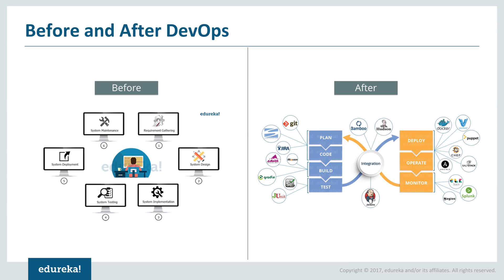Before DevOps, the methodology used was the waterfall model, which had a lot of issues because the entire source code of the application was first built, then tested, and then deployed onto the production servers. If there was any bug, developers had to go through the entire source code. Then came the agile methodology, which made the dev part of the company agile, but the ops part still couldn't cope with the speed at which developers were writing code. To solve that problem, DevOps was introduced.